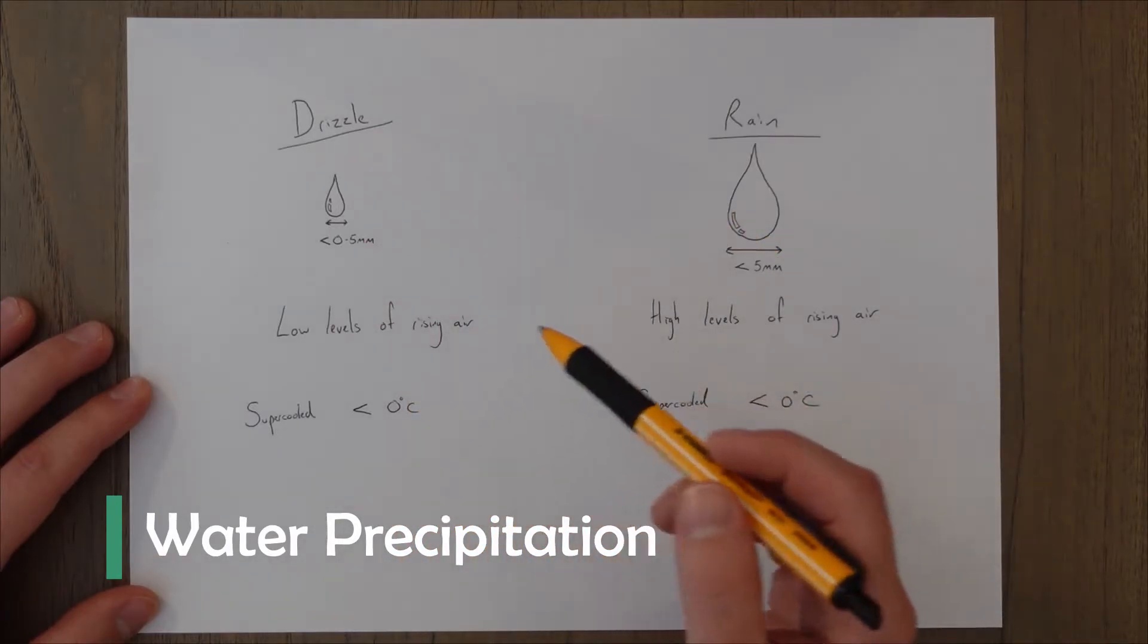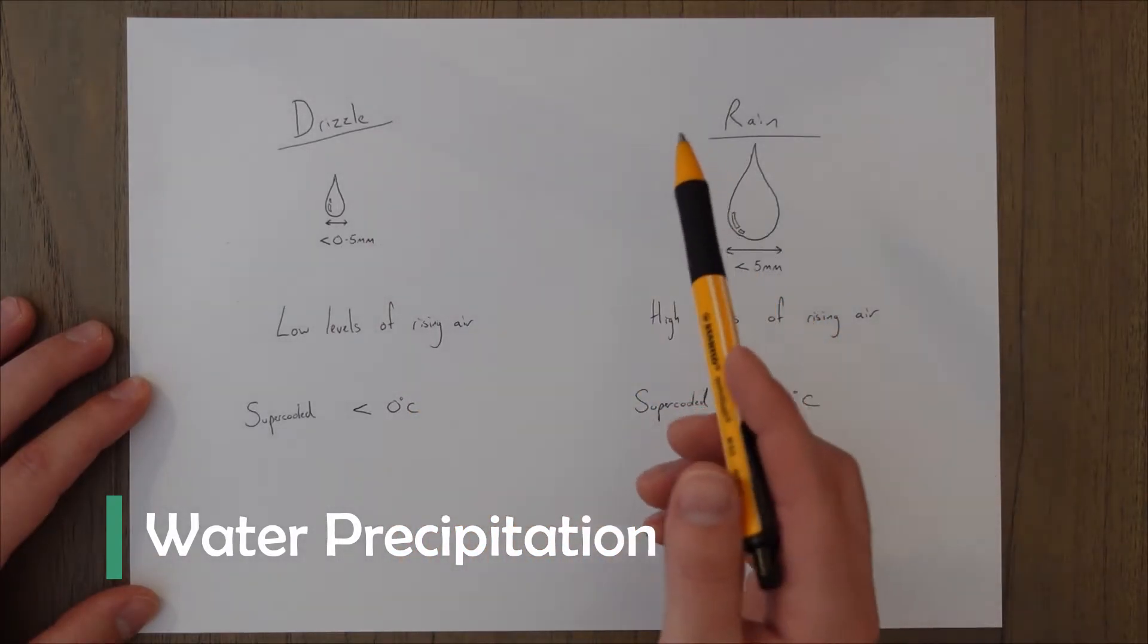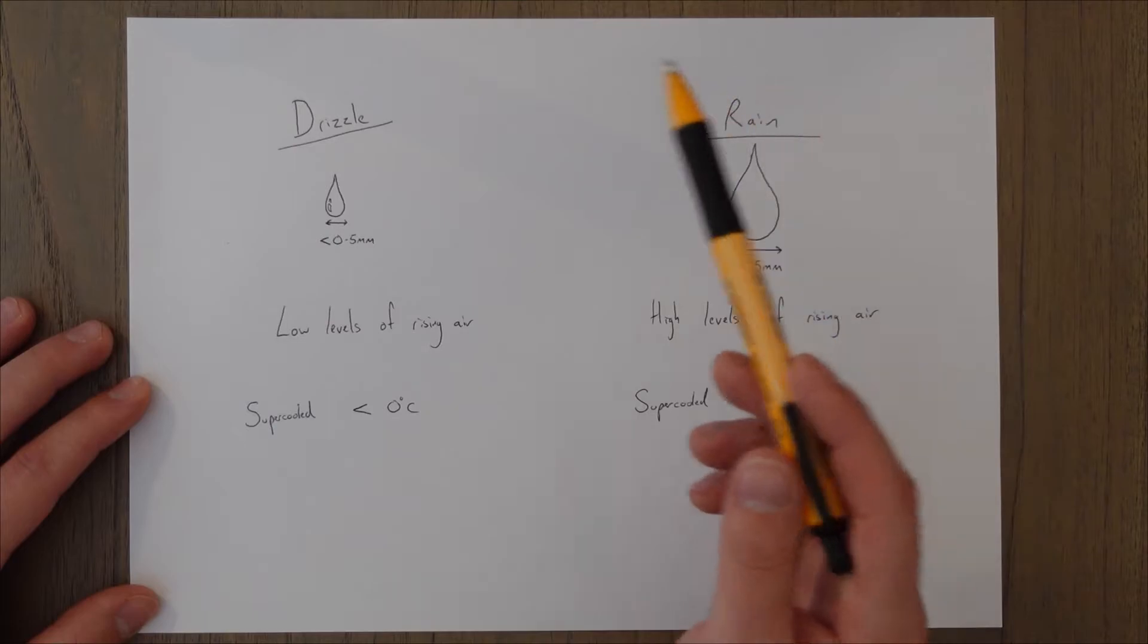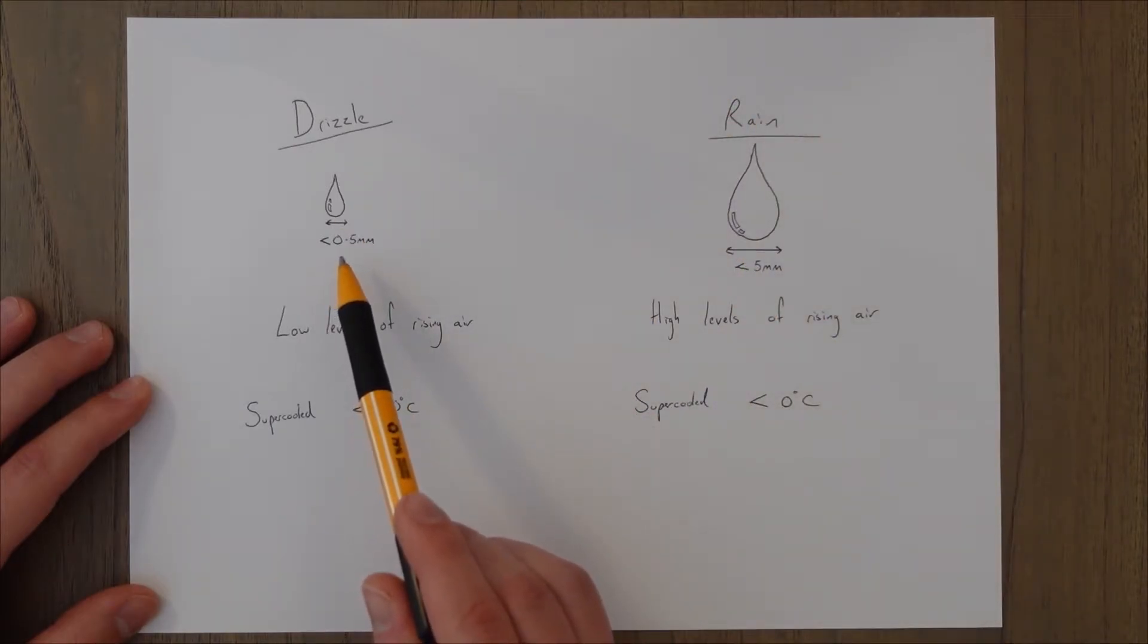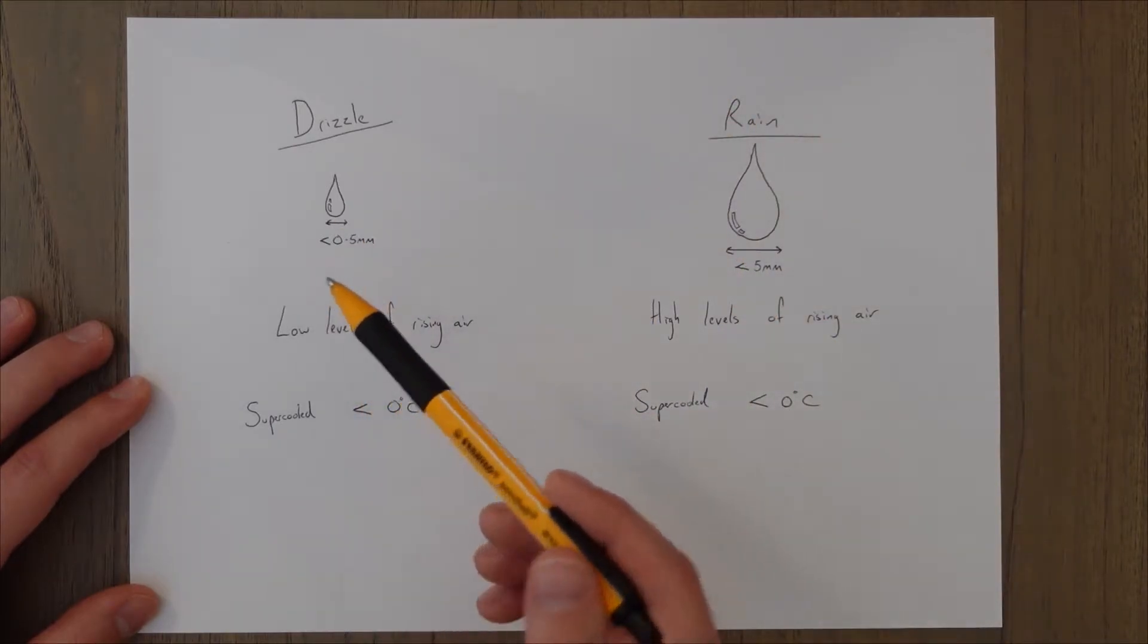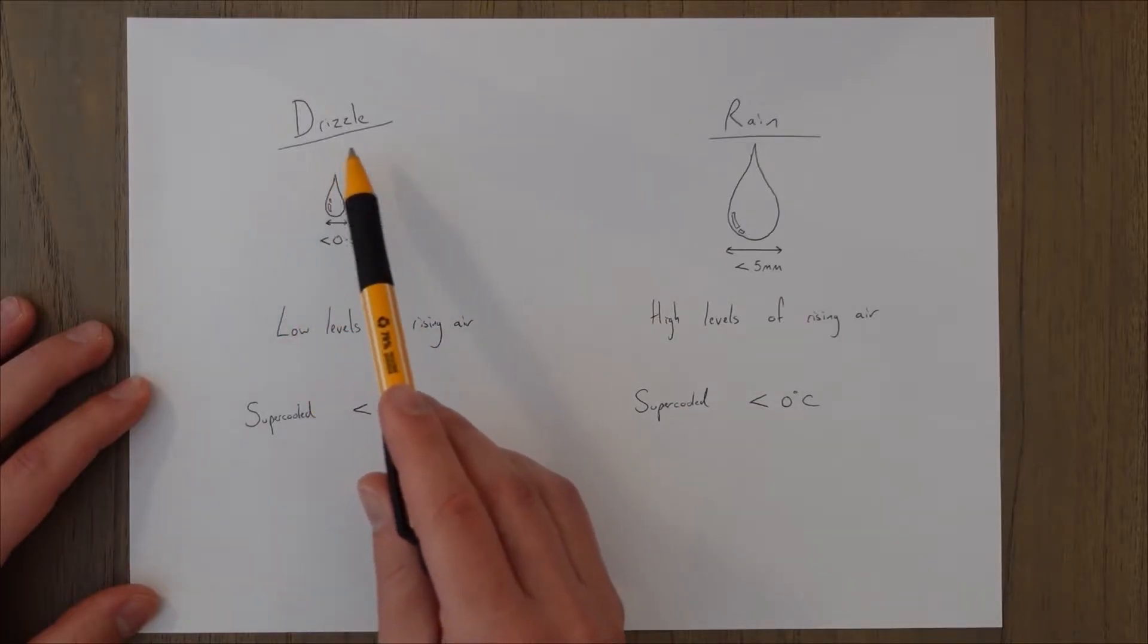Water droplets falling as precipitation fall into two camps based on the size of the droplets. If they are small and have a diameter of less than 0.5 millimeters then this type of precipitation is known as drizzle.